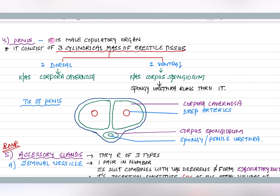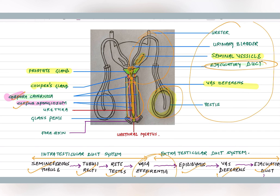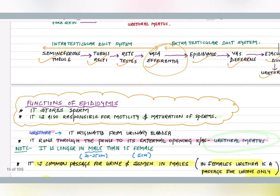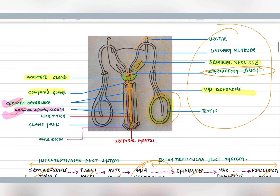The penis is the male copulatory organ. It consists of three cylindrical masses of erectile tissue: two are on the dorsal side — the corpora cavernosa — and one is on the ventral side — the corpus spongiosum. The spongy urethra runs through the corpus spongiosum. The glans penis is covered by the prepuce or foreskin.